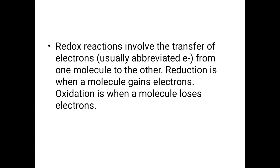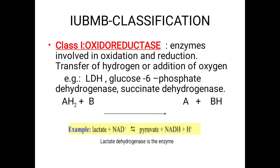That is why I gave the redox definition. Oxidoreductases are enzymes involved in oxidation and reduction reactions — transfer of hydrogen or addition of oxygen. Examples of oxidoreductase group enzymes are: LDH (lactate dehydrogenase), glucose-6-phosphate dehydrogenase (G6PD), and succinate dehydrogenase.